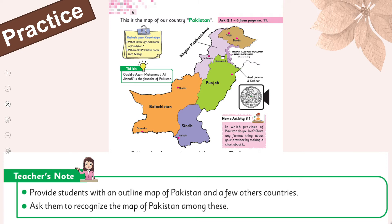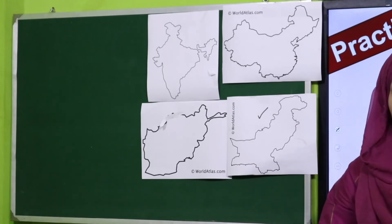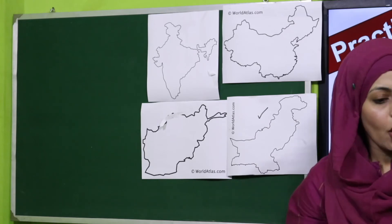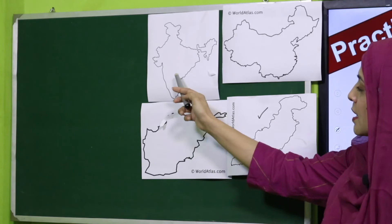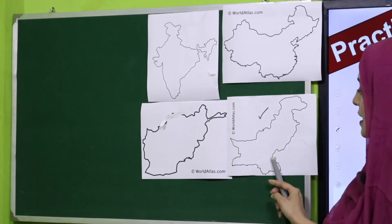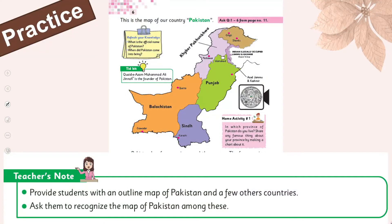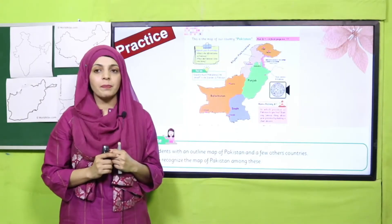You can see different maps on your screen — these are outlines of different countries. Quickly tell me: is this the map of Pakistan? Is this, or this? Yes, this is the map of Pakistan! You guessed it right. You have also seen it on the pages of your book. The provinces are four: Balochistan, Sindh, Punjab, and Khyber Pakhtunkhwa.